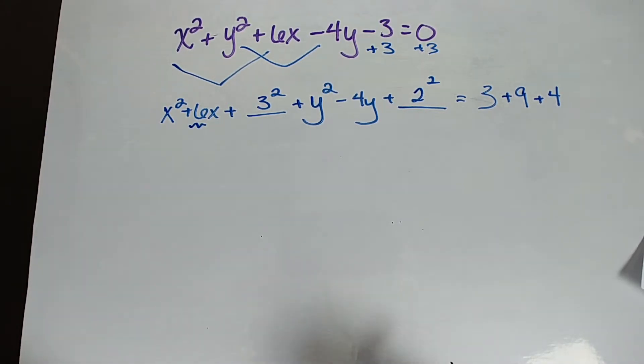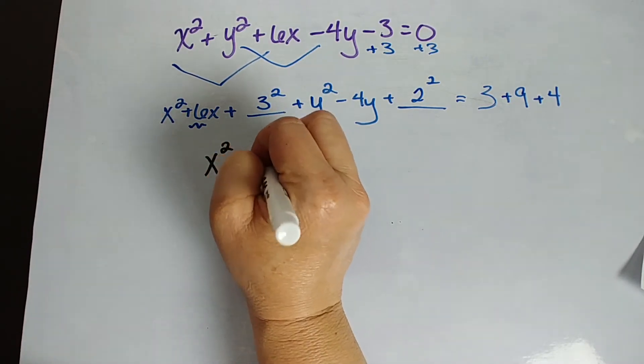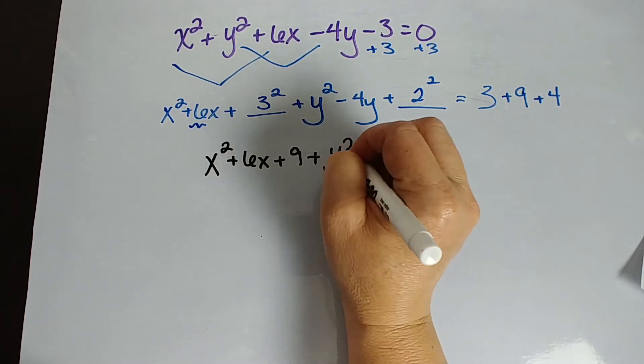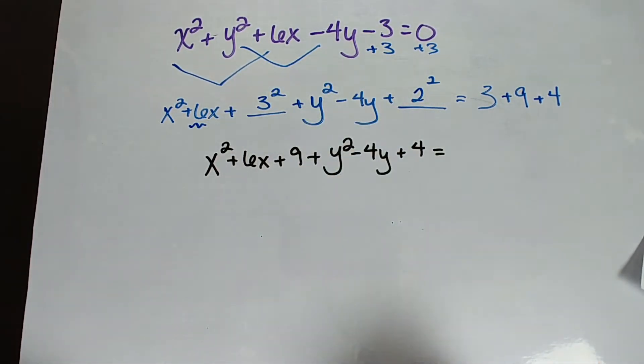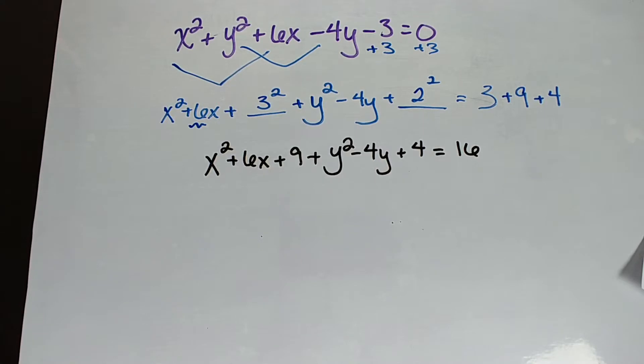Let's clean this up. So let's say x squared plus 6x plus 9 plus y squared minus 4y plus 4 equals, and we can do a little bit of math, 9 plus 3 plus 4 is 16.